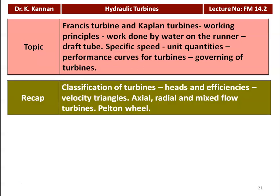We recap from the earlier lecture. In the previous lecture on hydraulic turbines, we classified the turbine and discussed the head and various efficiencies of the turbines. We drew the velocity triangle for the Pelton turbine. We classified the turbine as axial, radial, and mixed flow turbine, and discussed the Pelton turbine, which is an impulse turbine. We calculated the work done and efficiency of the Pelton turbine.